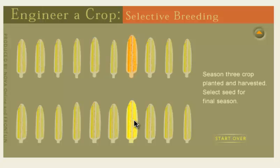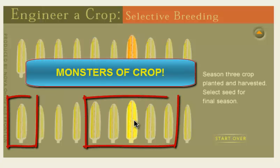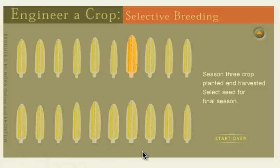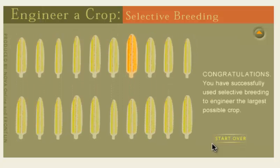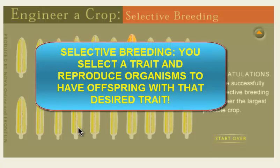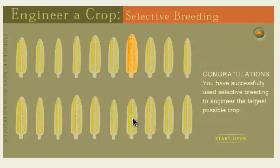Throughout every growing season, the percentage of large ears of corn compared to small ears is increasing, so our ears of corn on average are getting bigger. Why? Because we selected corn size, kept those seeds, and bred the corn plants to produce those types of seeds. So selective breeding is when you pick a trait that you like, and then you breed that organism to produce offspring with that trait. That concludes our vodcast for tonight — thank you for your time.